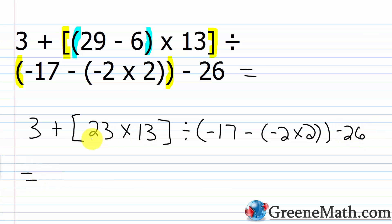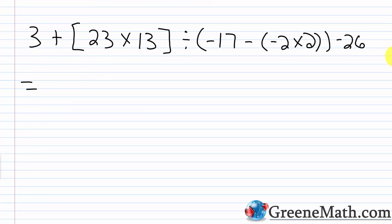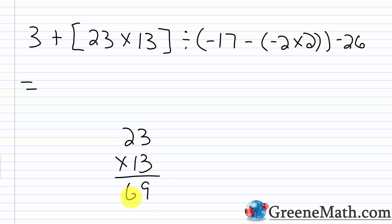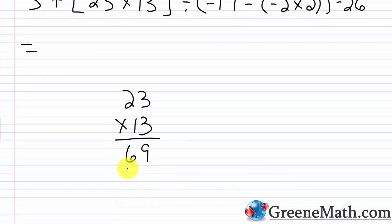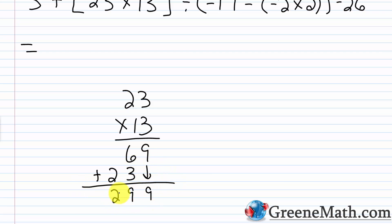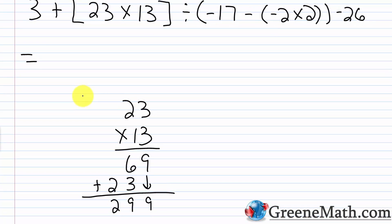Staying inside the brackets, I have 23 times 13. I don't know that off the top of my head, so let's do a vertical multiplication. 23 times 13: 3 times 3 is 9, 3 times 2 is 6. Then 1 times 23 is 23, so put the 3 here and the 2 here. Bring down the 9, 6 plus 3 is 9, bring down the 2. So 299.